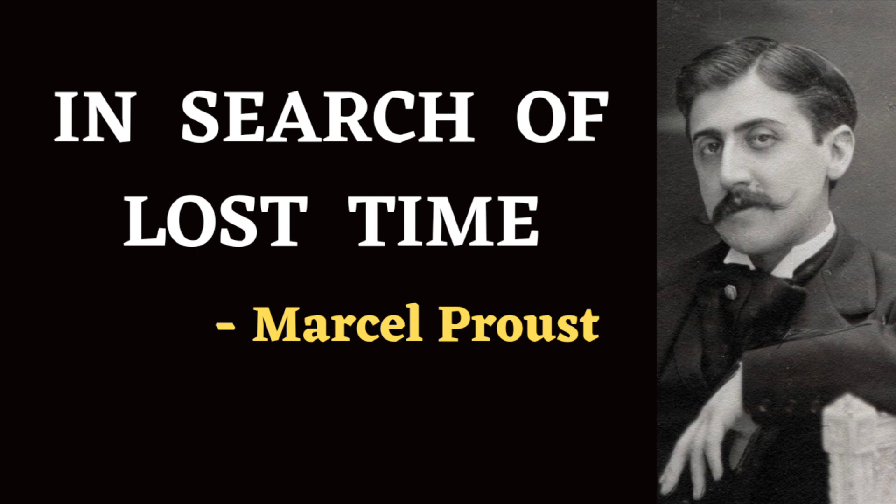In Volume 5, titled The Captive, the novel continues to delve into the intricate web of relationships and desires among the characters introduced in earlier volumes. The novel focuses on the narrator's fascination with Albertine Simonet and his attempts to possess and control her. Set primarily in Paris, The Captive explores themes of jealousy, obsession and the elusive nature of love. Proust delves deeply into the psychology of desire and complexities of human emotion, painting a nuanced portrait of the narrator's inner turmoil as he grapples with his feelings for Albertine.